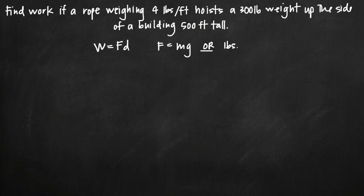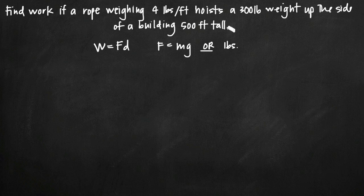Today we're going to be talking about how to find work. In this particular problem, we have a rope that weighs 4 pounds per foot, which is hoisting a 300-pound weight up the side of a building from the ground all the way to the top, and the building is 500 feet tall.